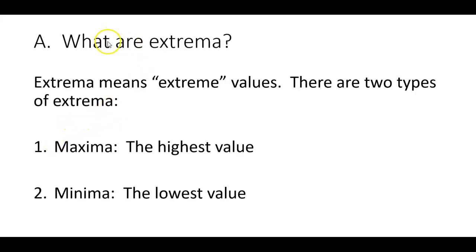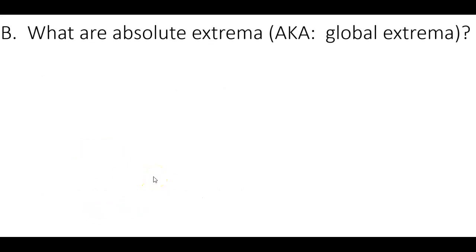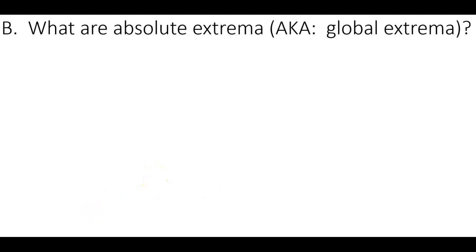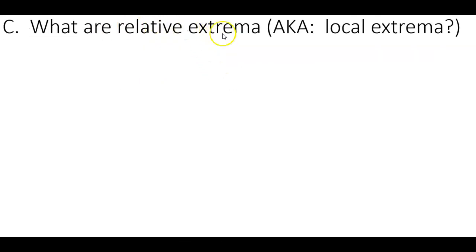Let's talk about what extrema are. The word extrema is a lot like the word extreme, because extrema means the extreme values. There are two types of extrema: the highest and the lowest ones. The highest is called the maxima and the lowest is called the minima. There are two types of extrema we'll discuss: absolute extrema and relative extrema.